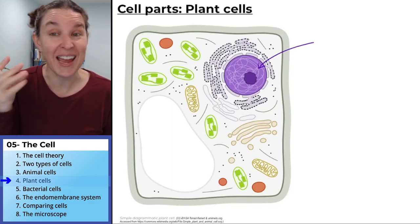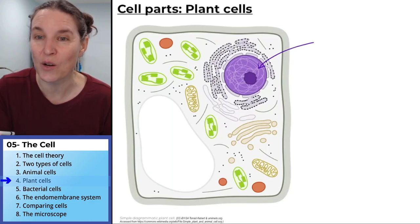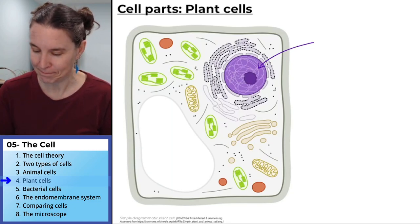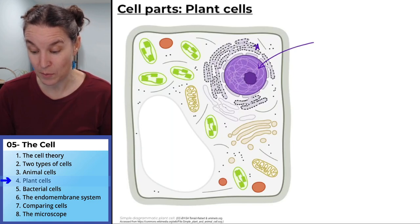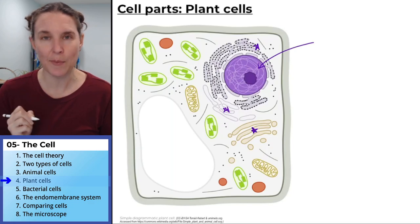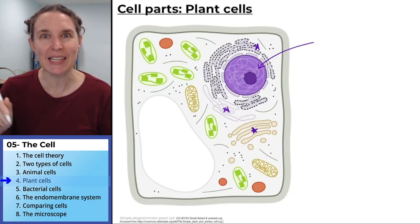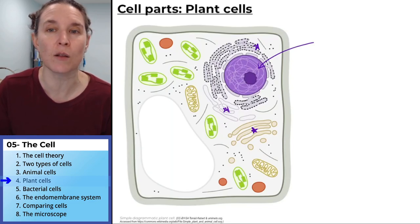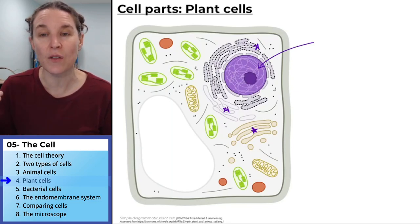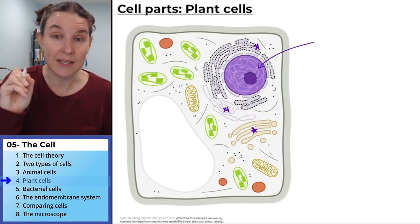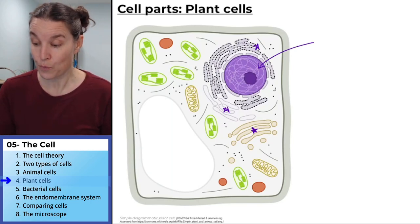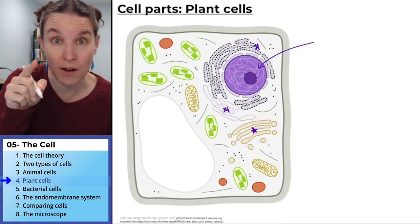You can see the nucleolus, the rough endoplasmic reticulum, the smooth endoplasmic reticulum, and the Golgi apparatus making its little vesicles that are bubbling off with cell products. That stuff is all there — put this somewhere you're not going to forget it.